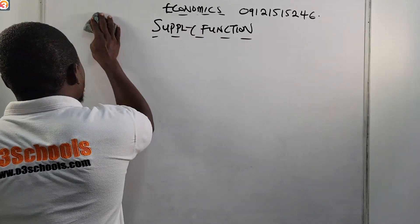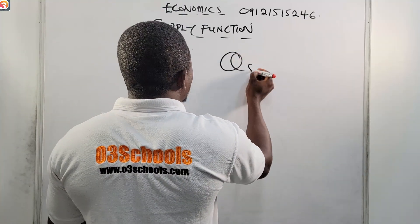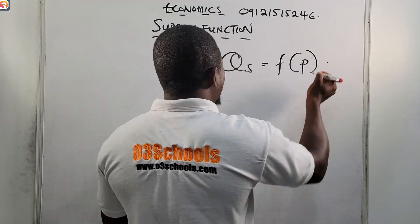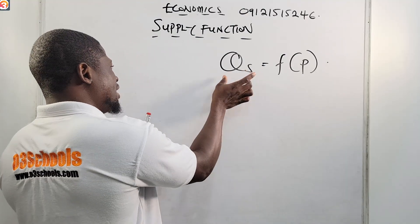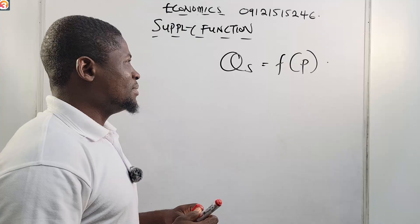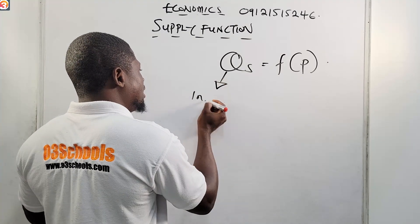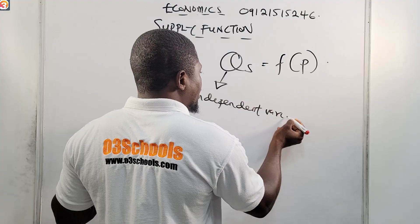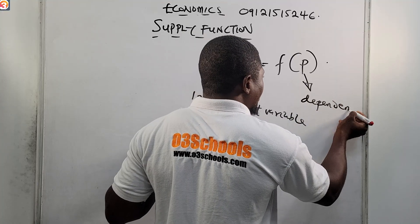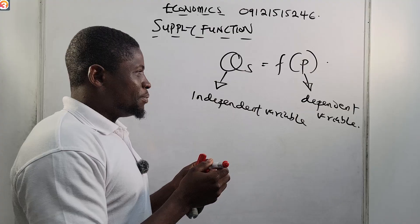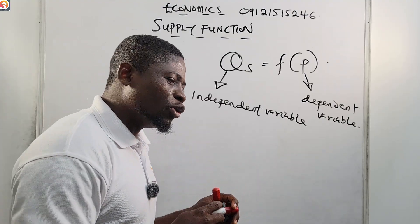Let's look at the supply function. We already know that the quantity supplied is a function of price. So most times we write: quantity supplied, QS, is a function of price. It is very obvious that the quantity supplied is dependent on the price. This means that the quantity supplied is the independent variable, and it is dependent on the price — that's why the price is the dependent variable.